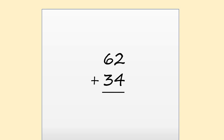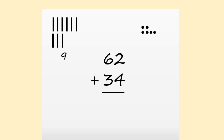You can try working out sums like this yourself. Let's imagine you are using pen and paper to work out this sum: sixty-two plus thirty-four. First, add the tens — six plus three equals nine, so there are nine tens in the answer. Now add the ones — two plus four equals six, so there are six ones in the answer. Nine tens and six ones is ninety-six.